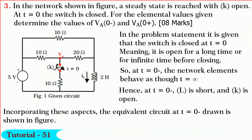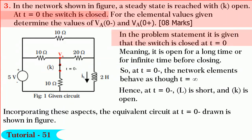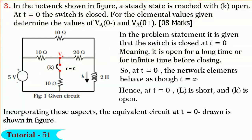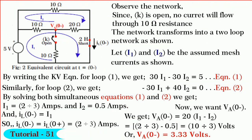Friends, next we shall solve the third question to find the node voltage VA(0-) and VA(0+) in the circuit shown in figure. It is given that the switch is closed at t equals 0, meaning it is open at t equals 0 minus and it might have remained open for a long time or for an infinite time. So at t equals 0 minus, the circuit elements behave as though t equals infinity. Hence at t equals 0 minus, L is short and K is open. The equivalent circuit at t equals 0 minus is shown in figure.